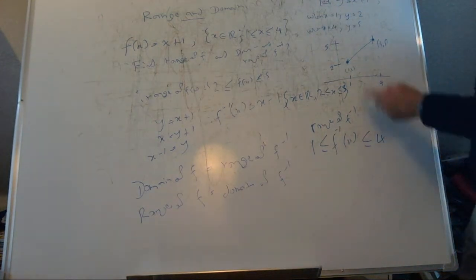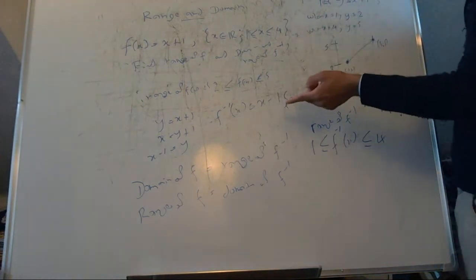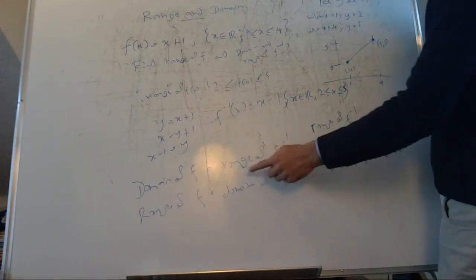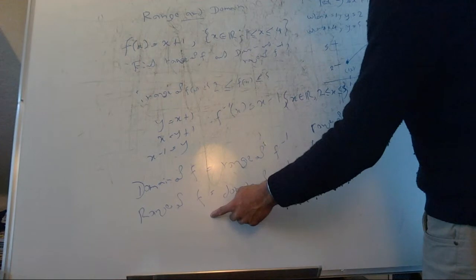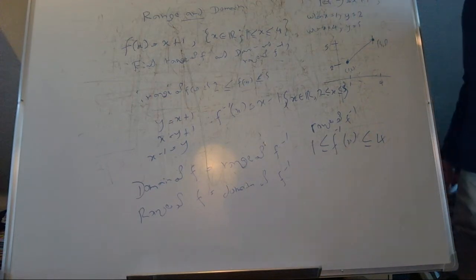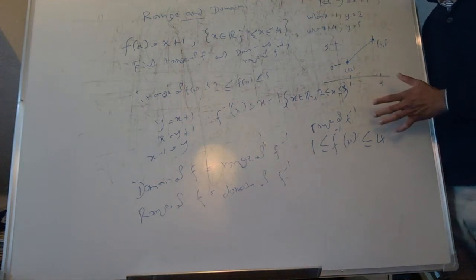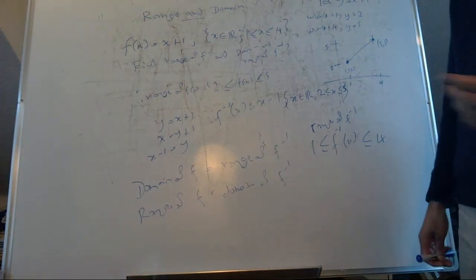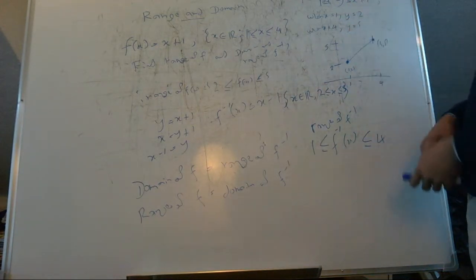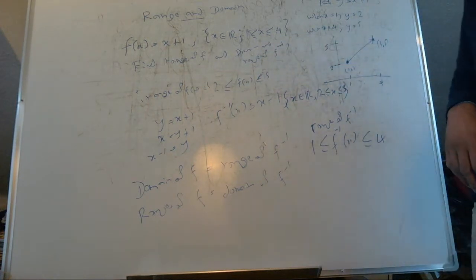To summarise: you're given the domain of the function, you work out the range, find the inverse function, then use the fact that domain and range swap for the inverse. In an exam the function won't be as simple as x plus 1, but the same principle applies — sketch the graph for the given domain and work out the range graphically.